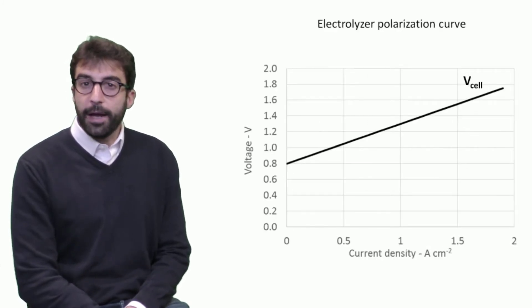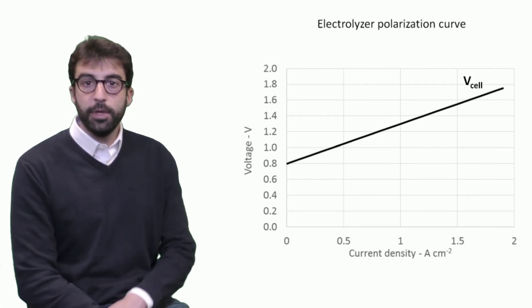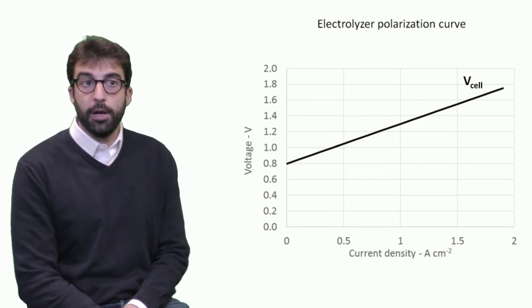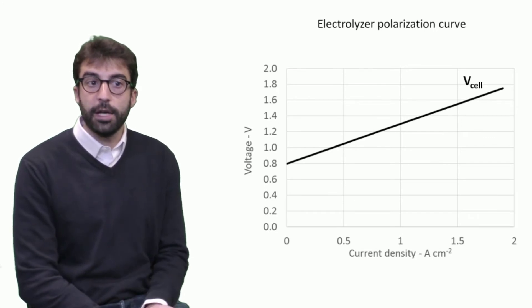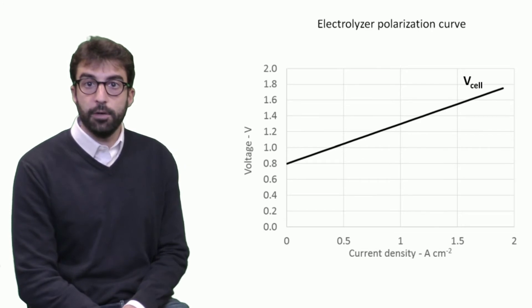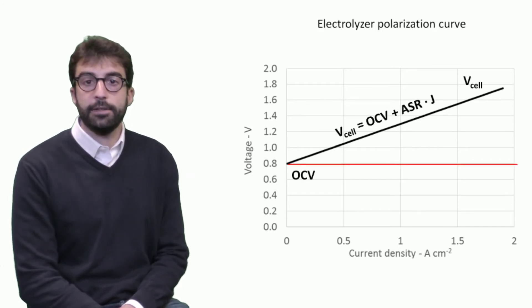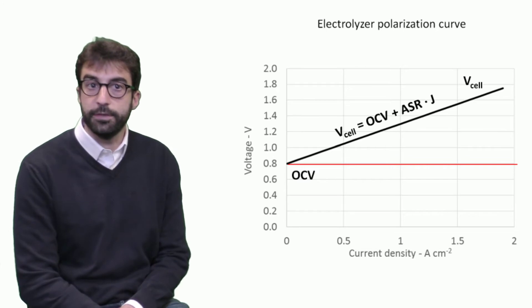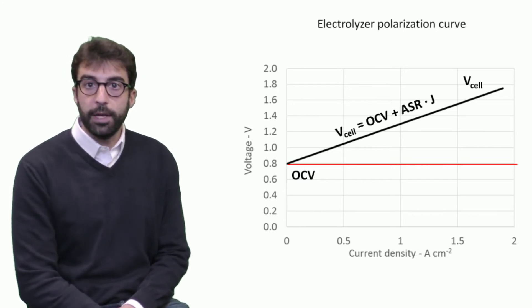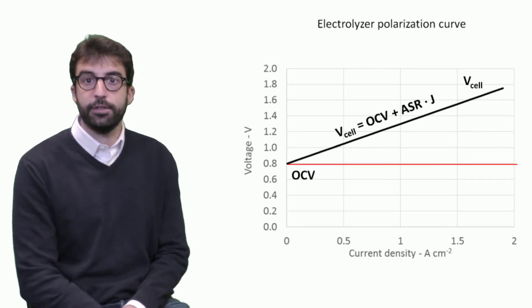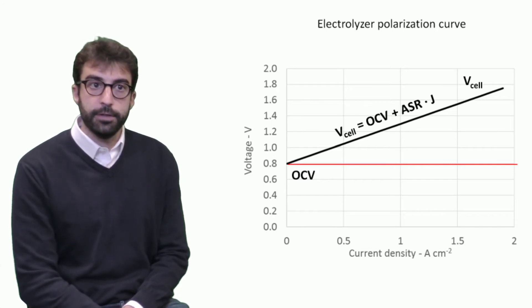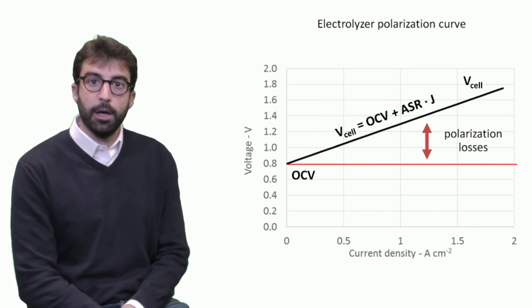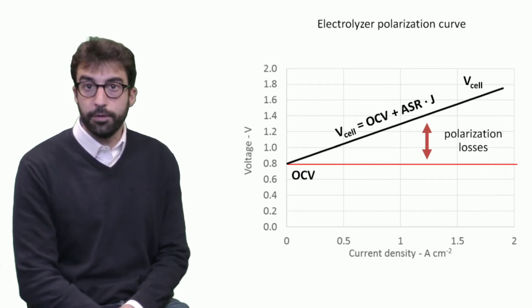Now let's go back to electrolyzer operation and plot an example of a polarization curve — the characteristic curve of an electrolyzer showing voltage as a function of current density. As with all electrolyzers, also for steam electrolyzers this curve has an increasing slope. Starting from the open circuit voltage (OCV) at zero current density, which is connected to the Nernst potential and the reversible voltage of the cell, we then have polarization losses that move the cell voltage to higher values.